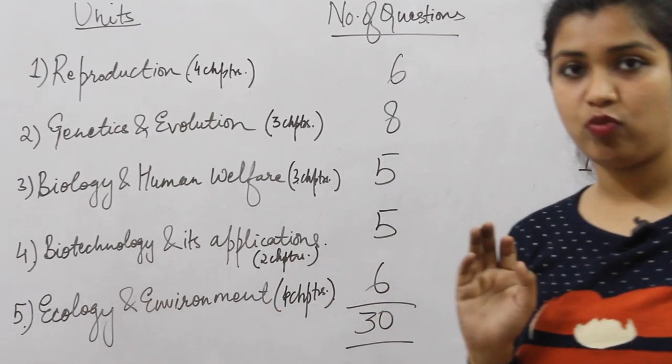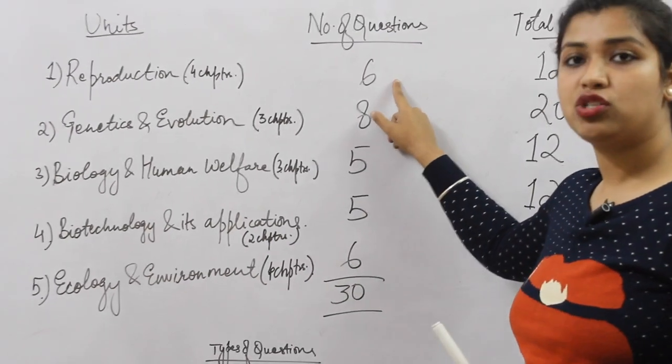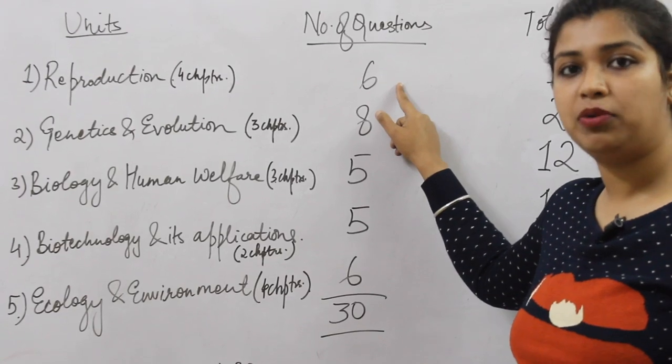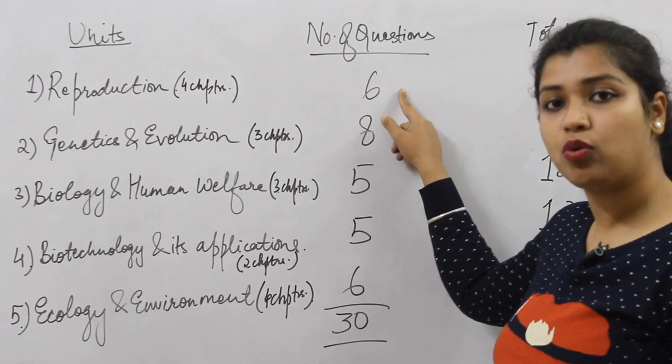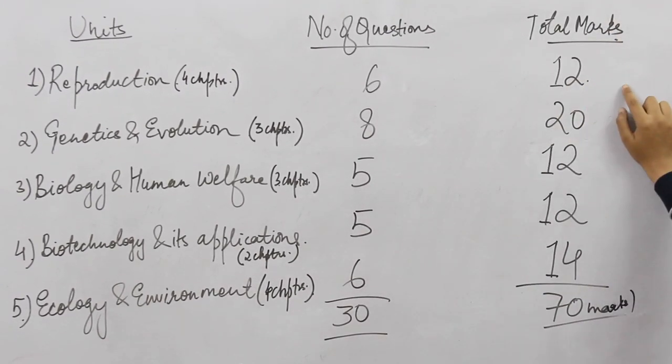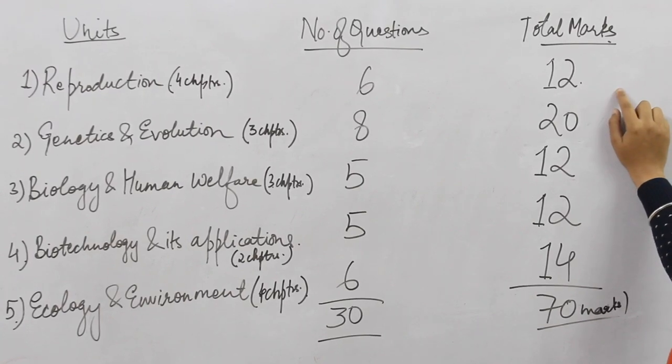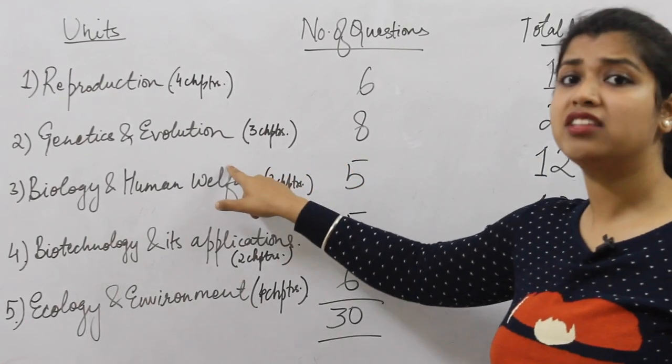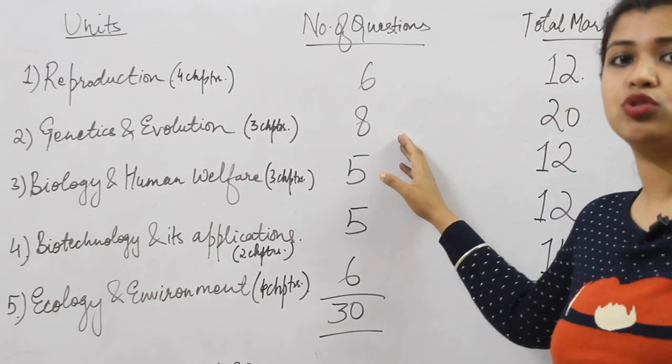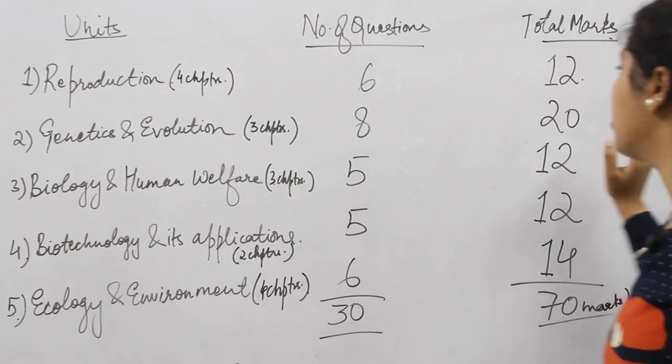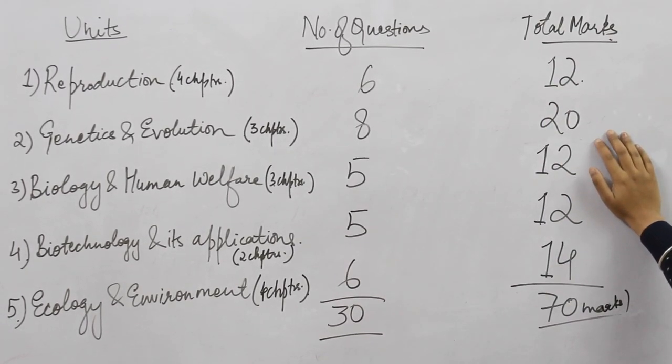If I talk about chapter-wise weightage, six questions from reproduction will be asked holding total marks weightage of 12 marks. Similarly, for genetics and evolution, eight questions will be asked, whereas the weightage for this chapter is the maximum, that is 20 marks.